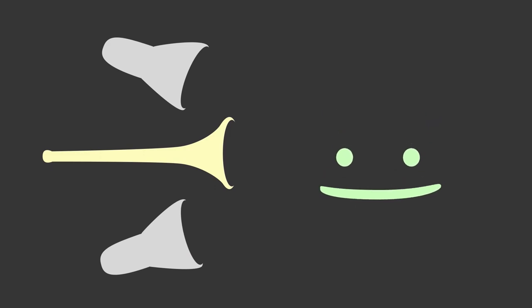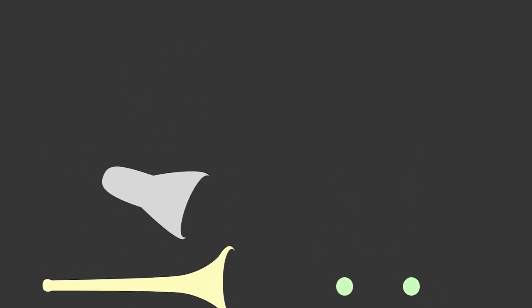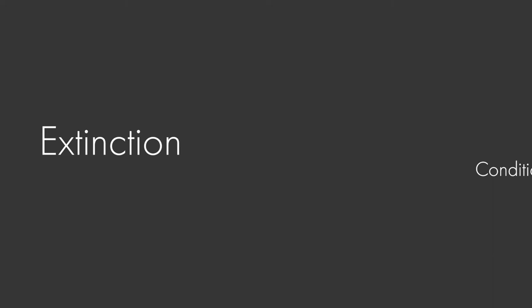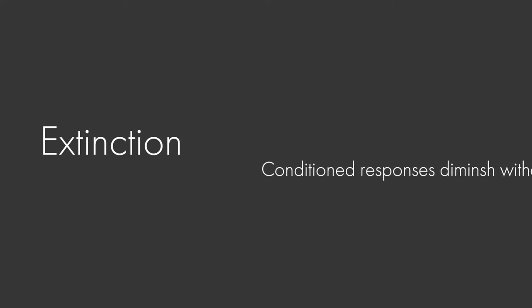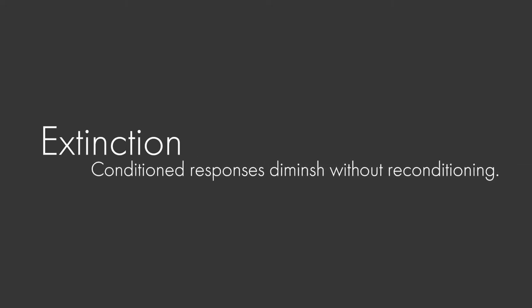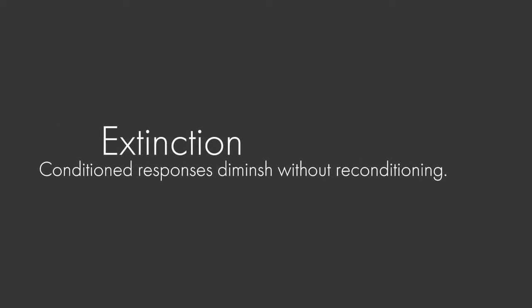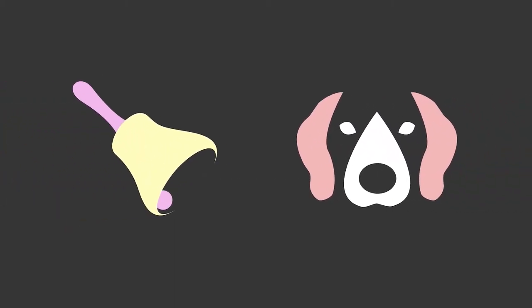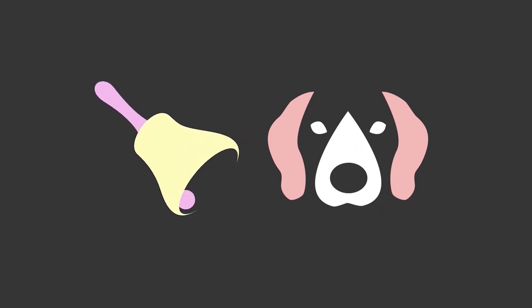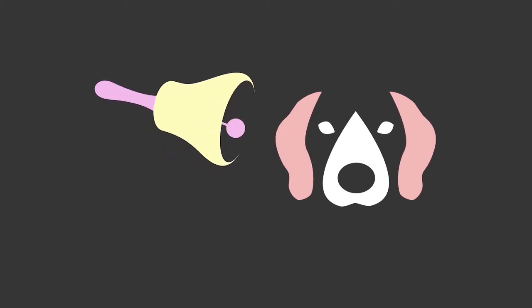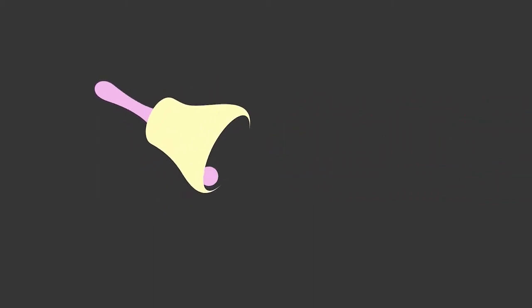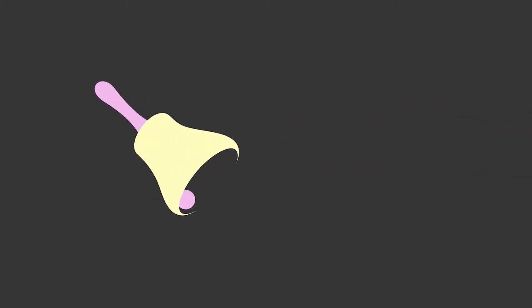After classically conditioning a particular response, the response can also be eliminated if the conditioned stimulus is presented repeatedly without the unconditioned stimulus. This effect is called extinction. For example, if Pavlov kept ringing the bell but never gave the dog any food afterwards, eventually the dog's conditioned response — salivating — would no longer happen when it heard the bell, because the bell would no longer be a predictor of food.